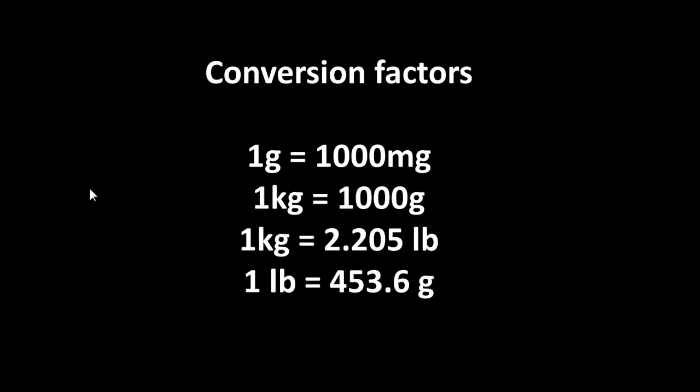So our conversion factors then, a gram is 1000 milligrams, a kilogram is 1000 grams, and between the two systems, metric and imperial, a kilogram is 2.205 pounds, and a pound is 453.6 grams.